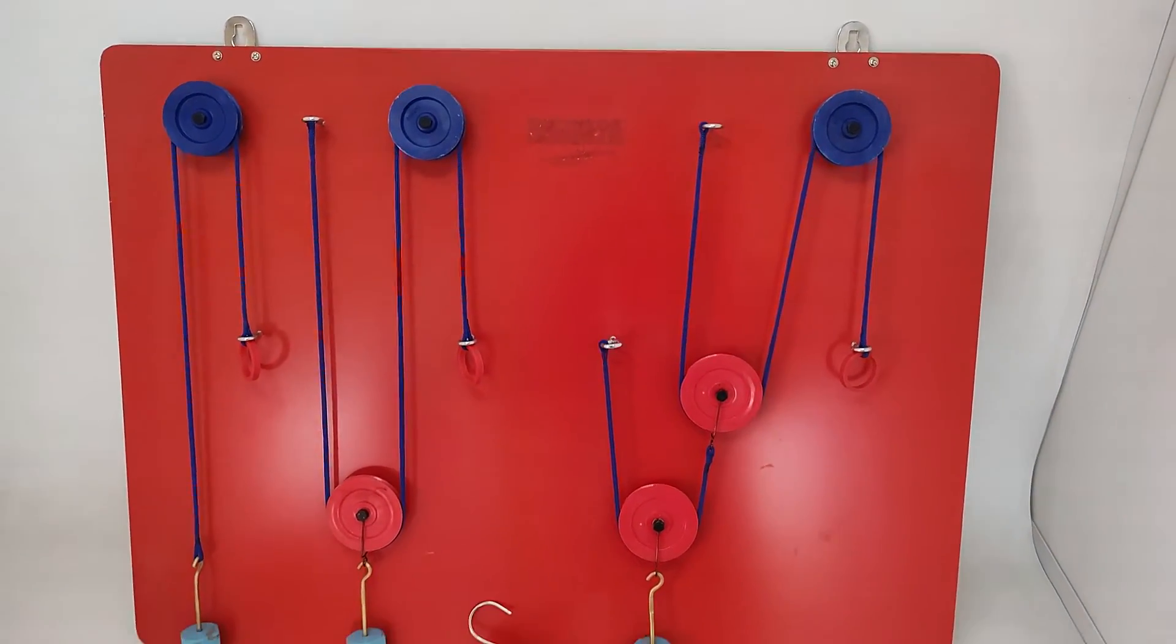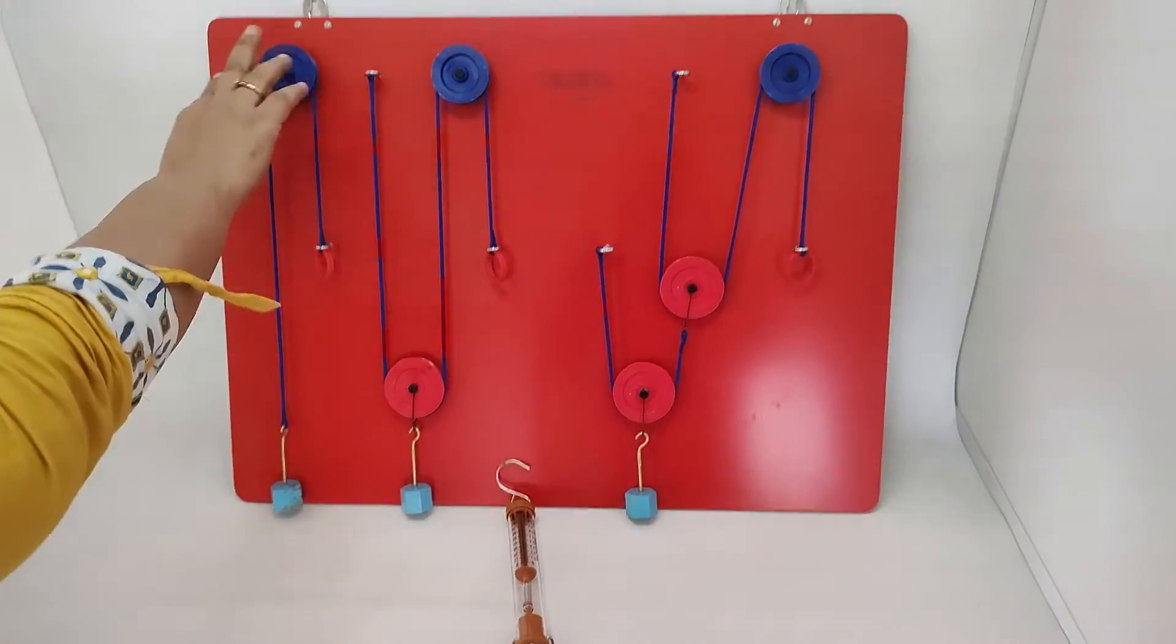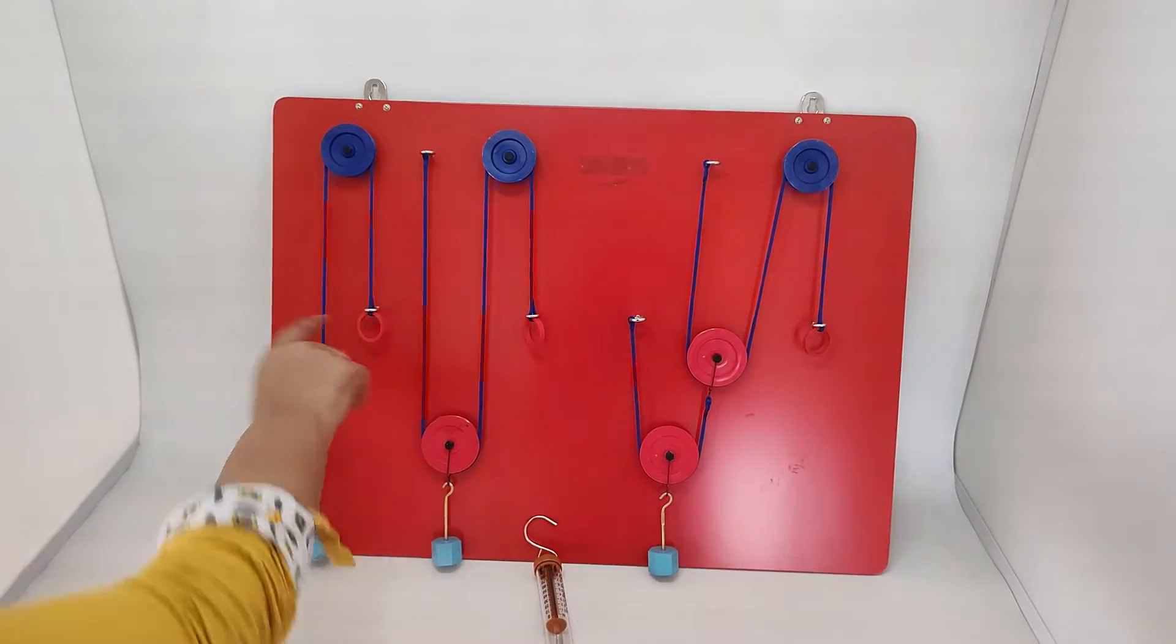In the first set of pulleys, there is one fixed pulley and a load. This pulley is fixed, and there is a ring to move this load.